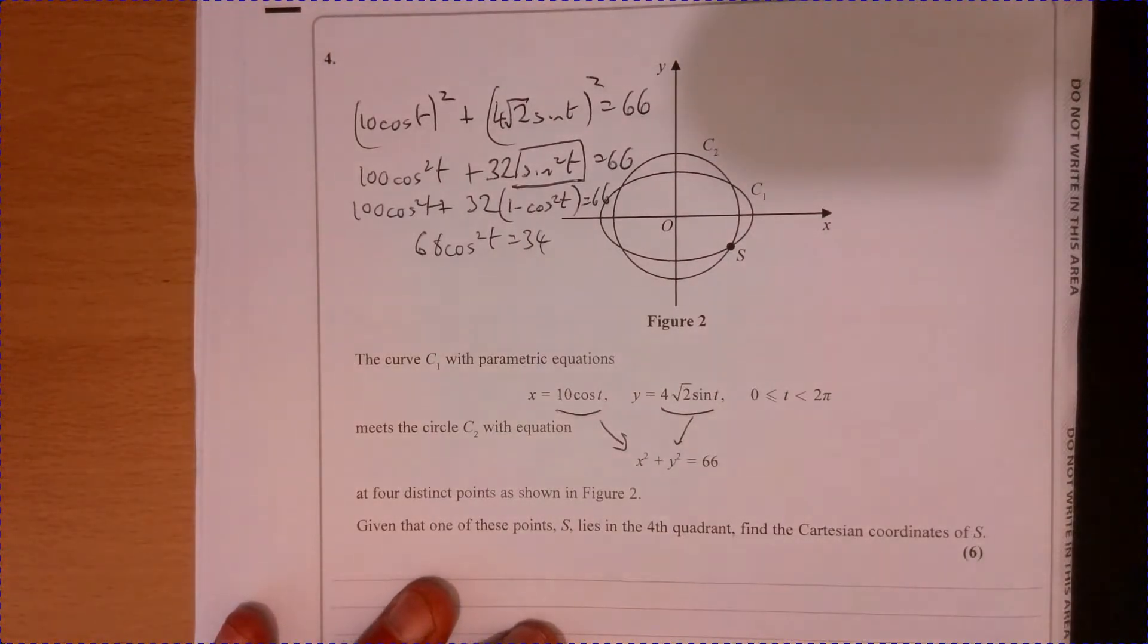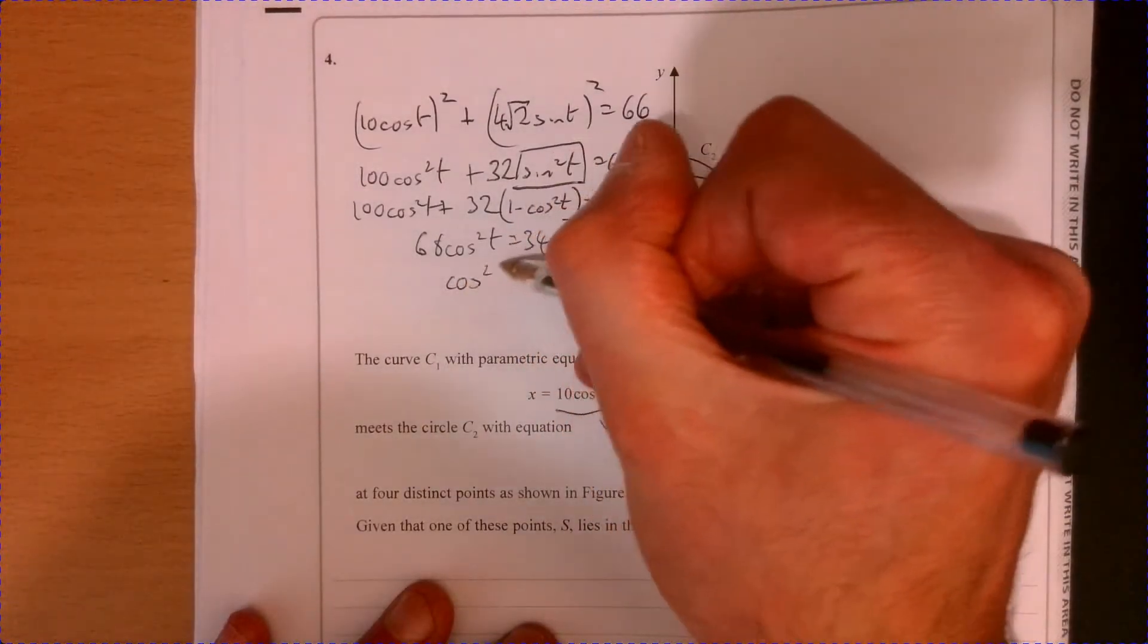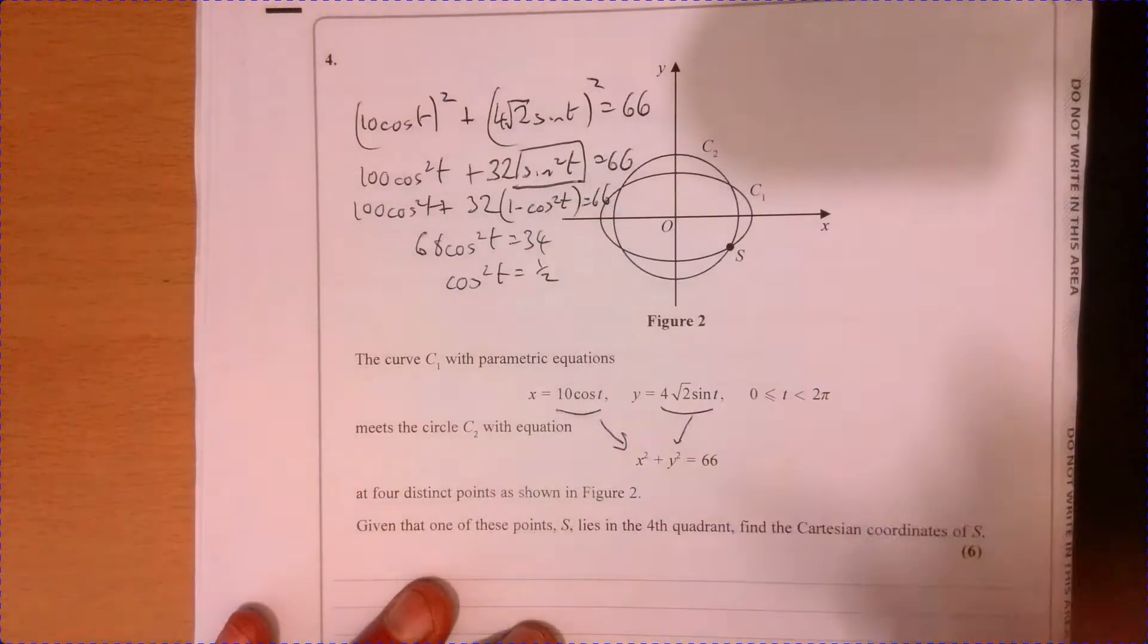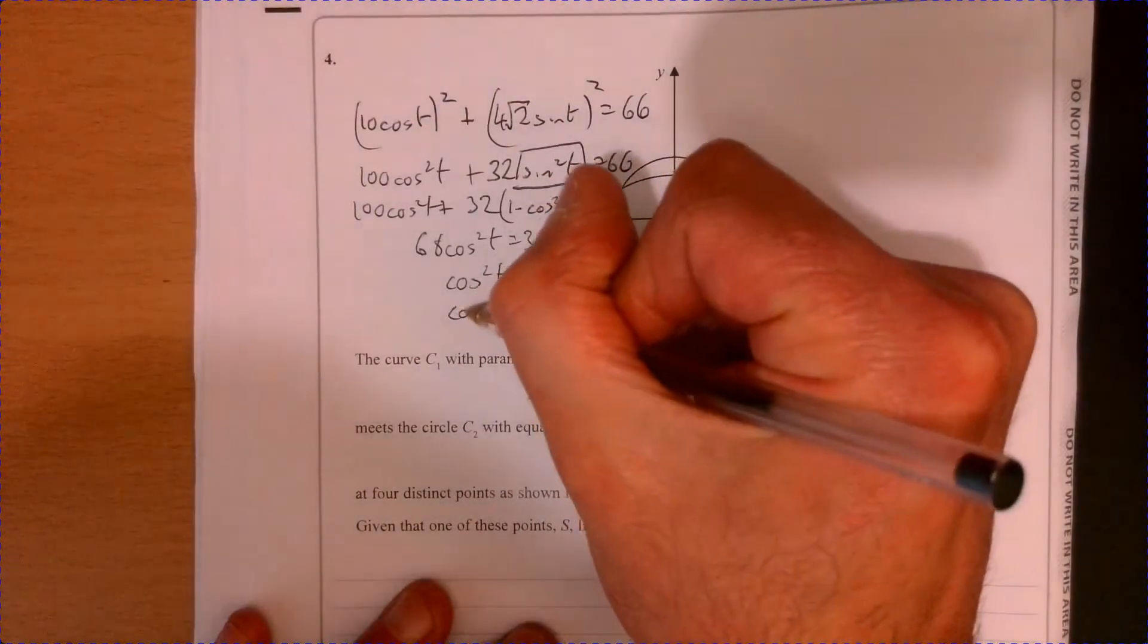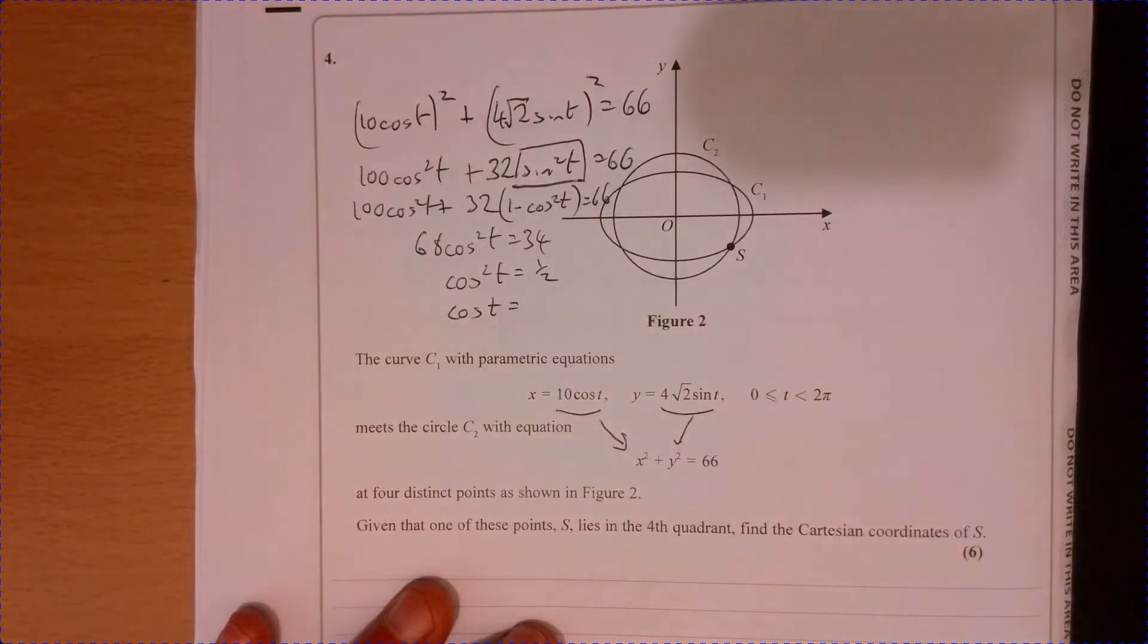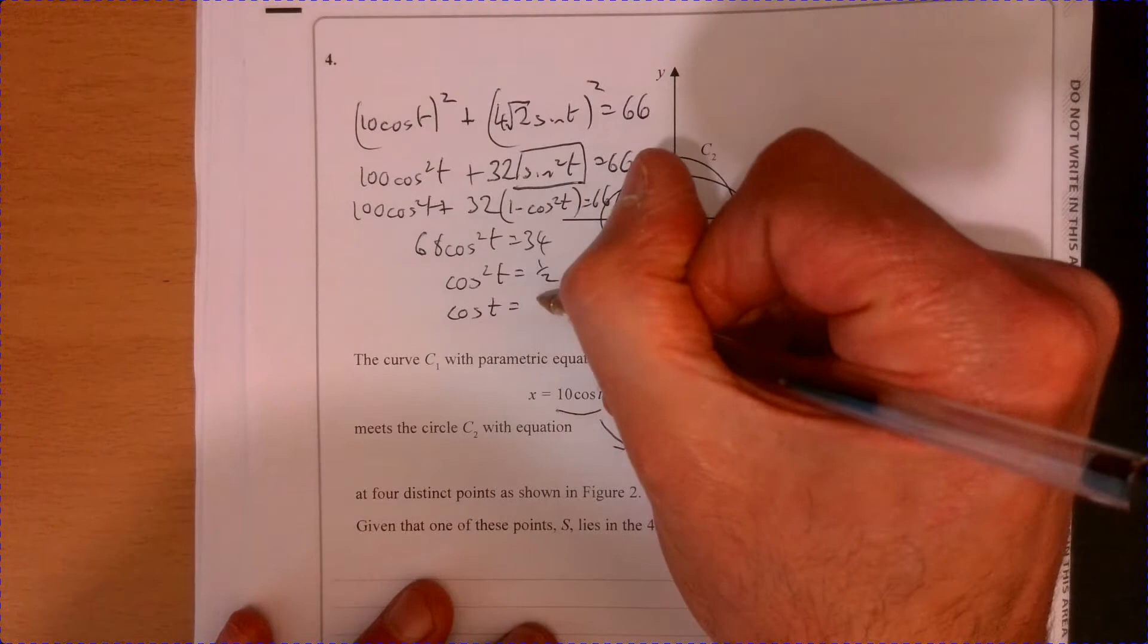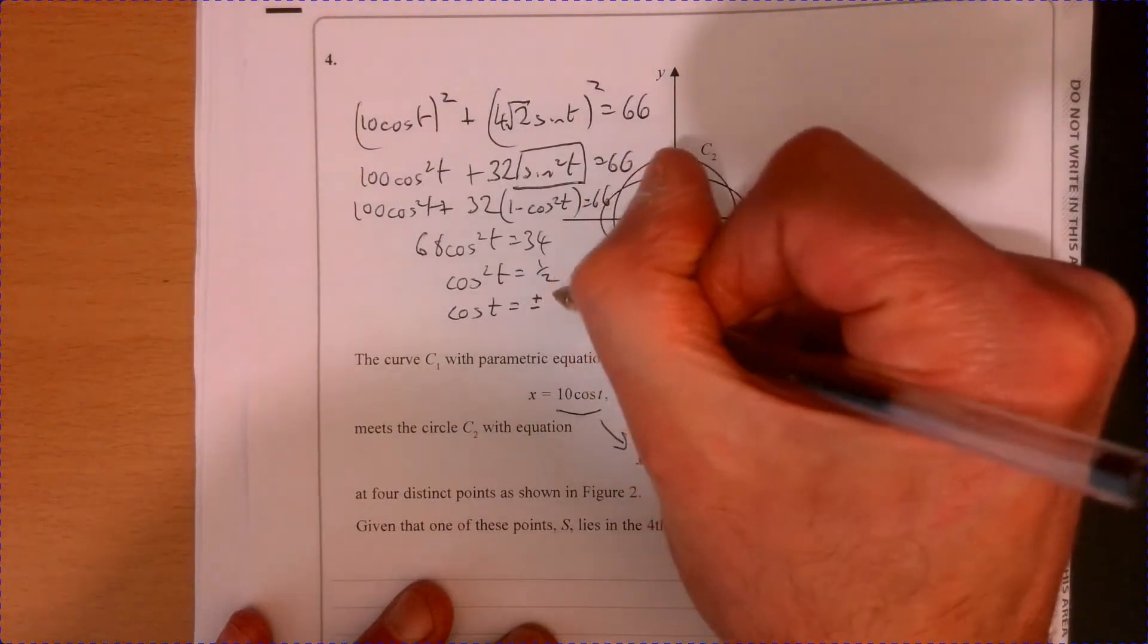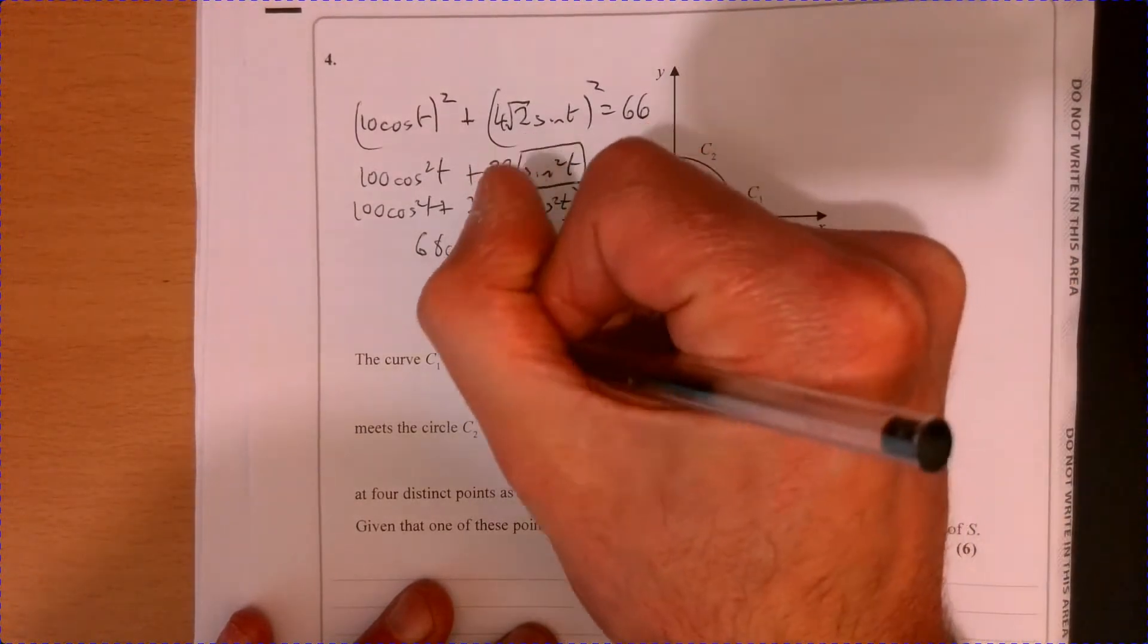Divide both sides by 68 and then that gives us cos squared T equals a half. So cos T is equal to plus minus root a half. Root a half is a quarter. So plus minus a quarter.